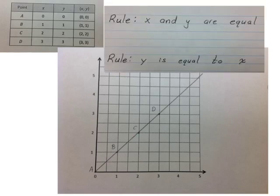So our pattern is that x and y are equal. There are two different ways we could state that rule: x and y are equal or y is equal to x. They both mean the same thing. Whatever x is, y will be the same number.